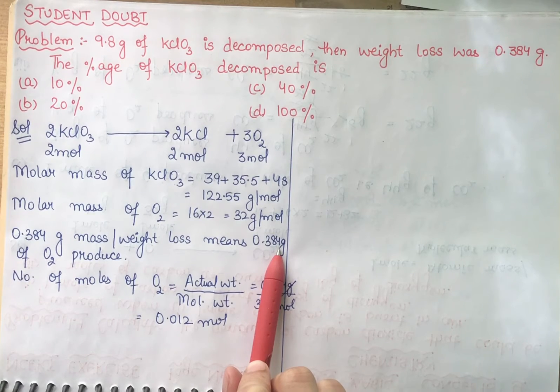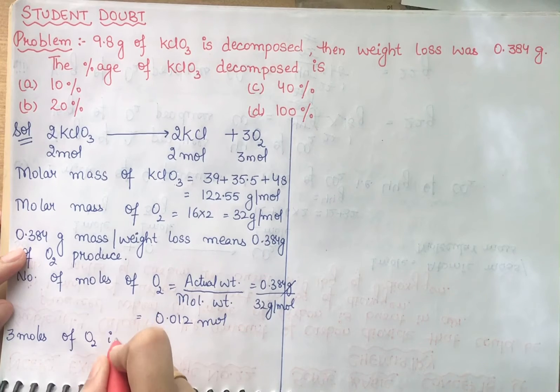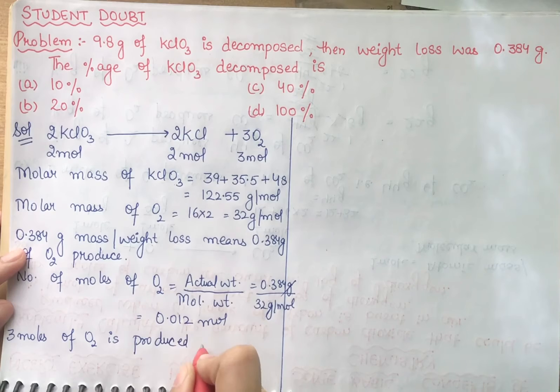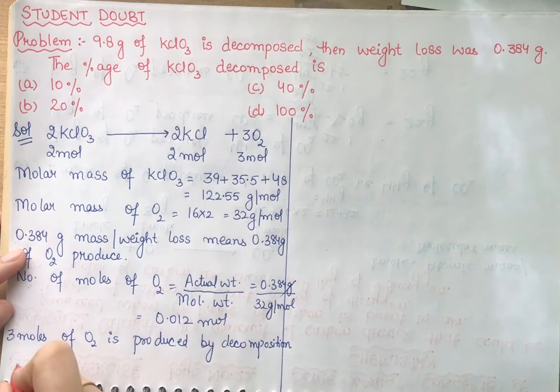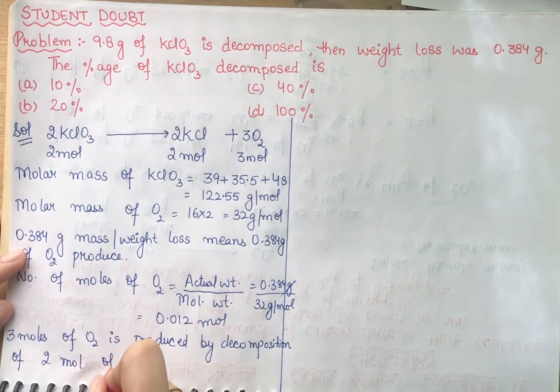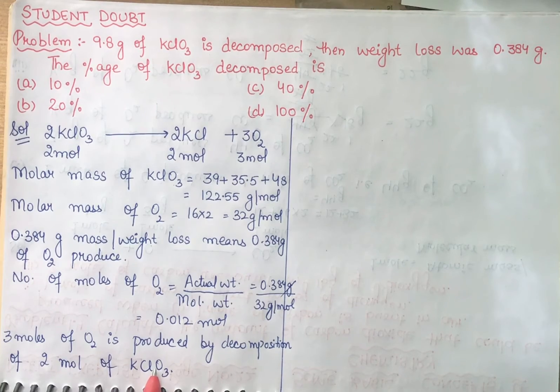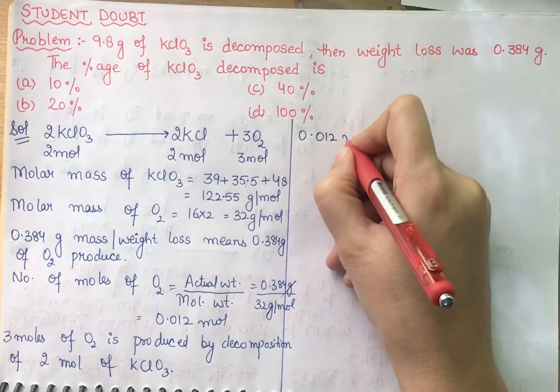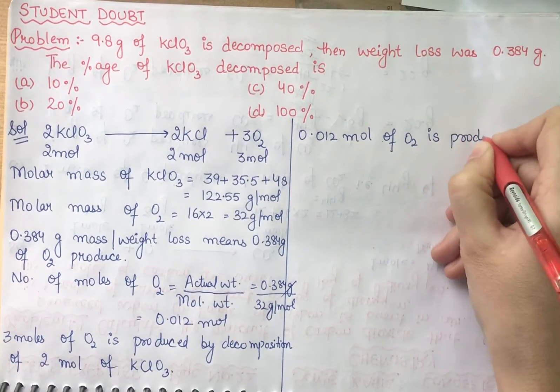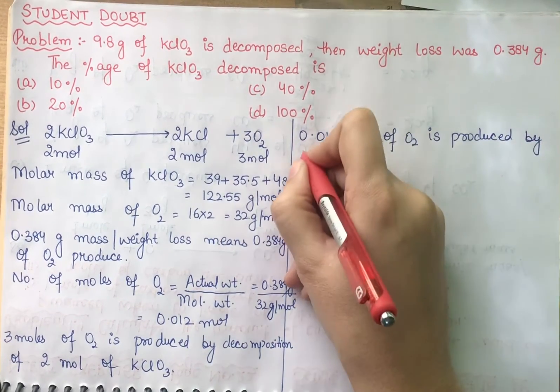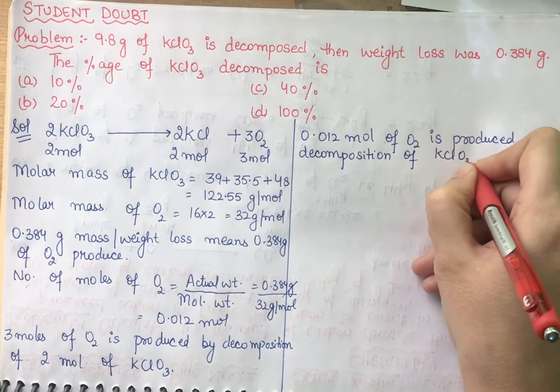So now you can apply the unity method. So what can you say? 3 moles of oxygen O2 is produced by decomposition of 2 moles of KClO3. O2 is produced by decomposition of KClO3.